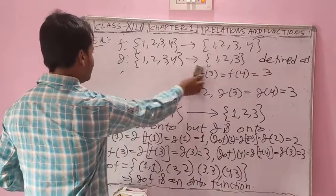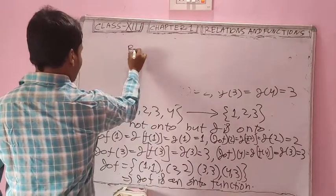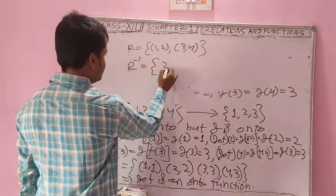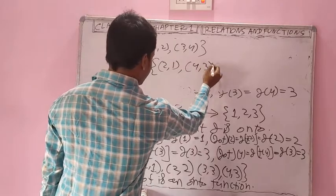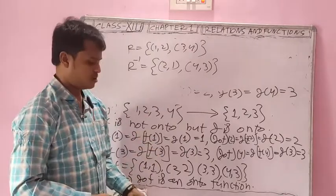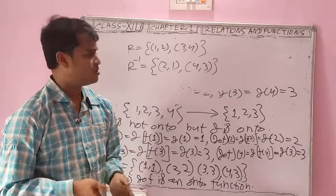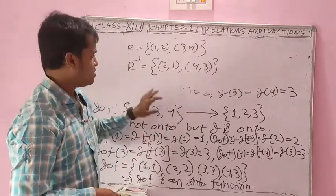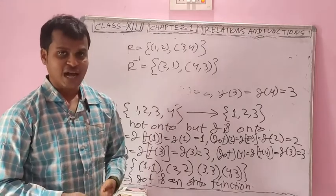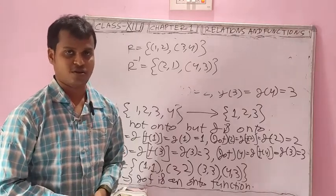Next, we need to find out how to find the inverse of a function. You know how to find the inverse of a relation — if R contains ordered pair (1,2), (3,4), then R inverse is (2,1), (4,3), simply by rotating the elements. In my next class, I will discuss how to find the inverse of a function. Thank you.